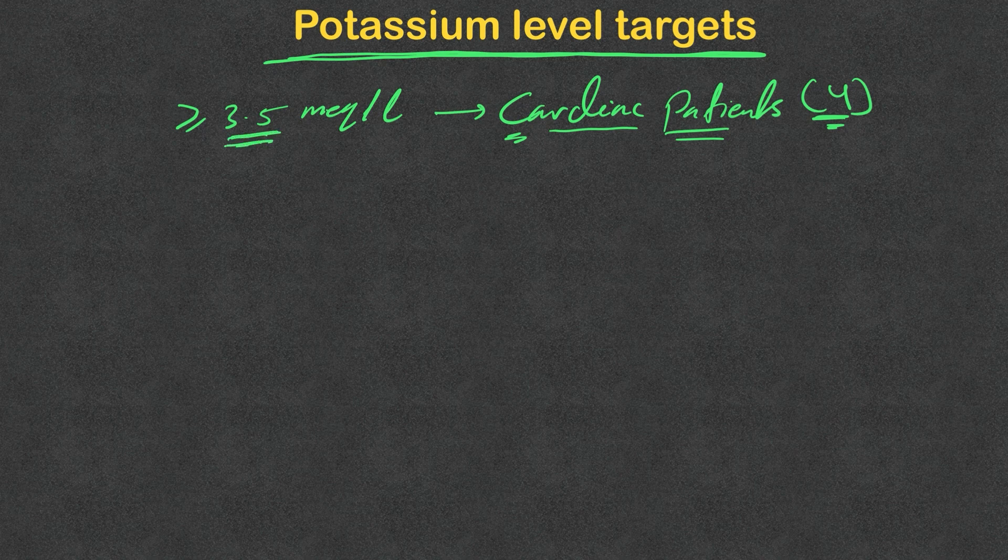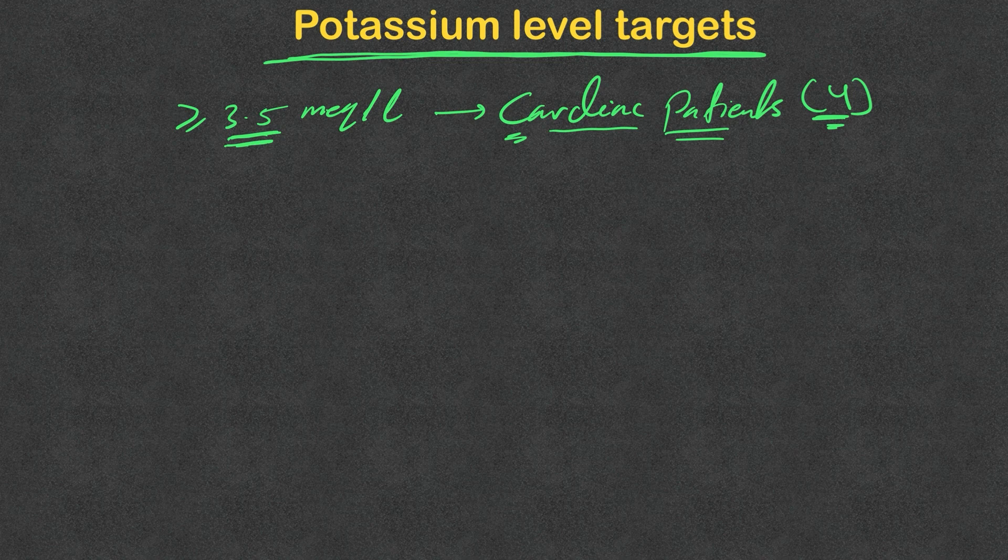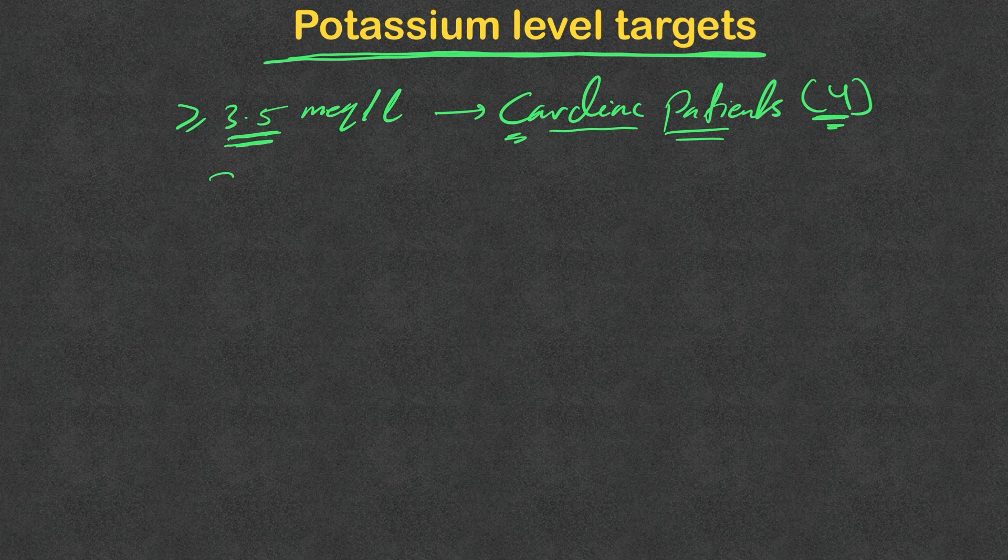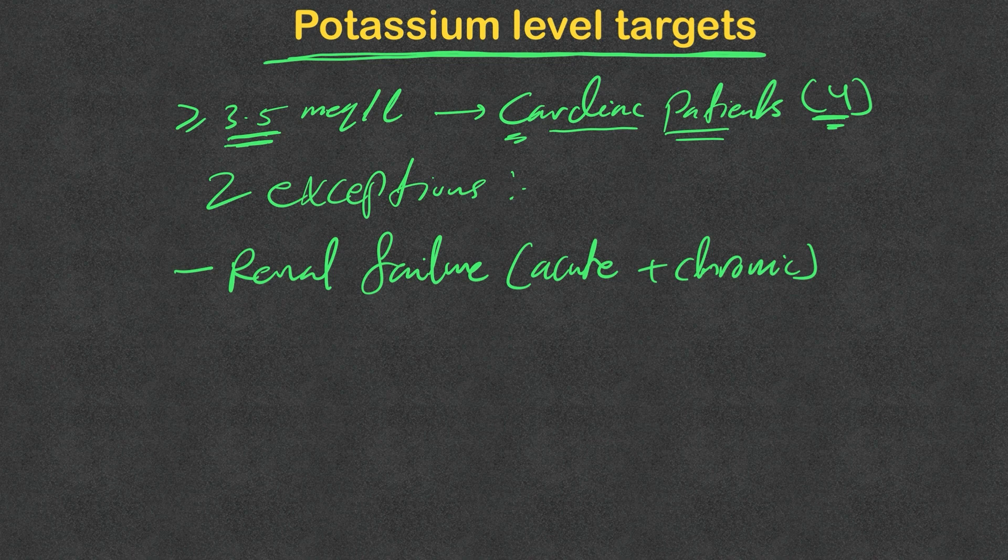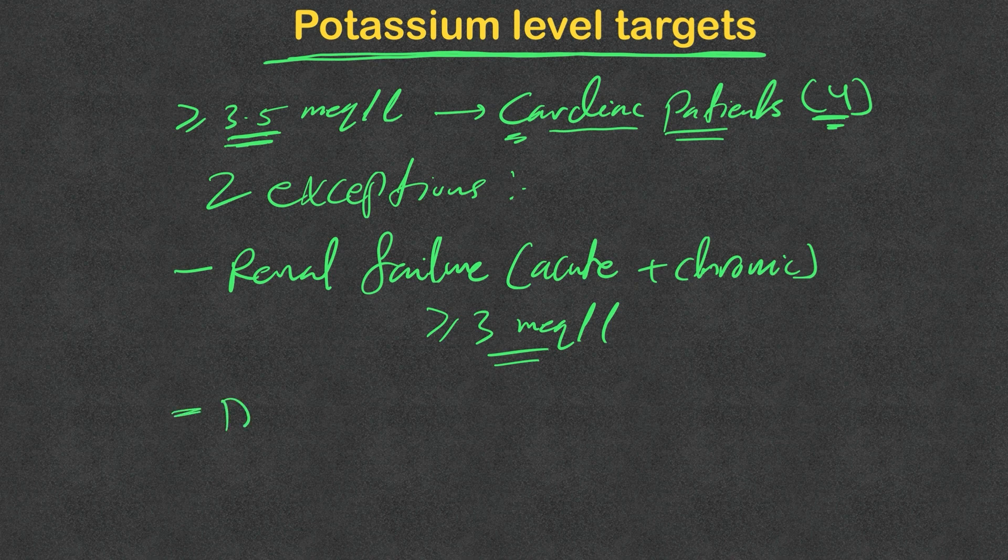Patients with potassium at this level or higher should not have any risk of developing arrhythmias or EKG changes. There are two exceptions to this. First, renal failure patients, whether acute or chronic. In these patients, the target we're trying to achieve is equal or above 3 milliequivalents per liter.